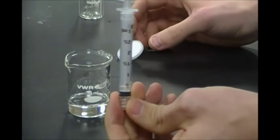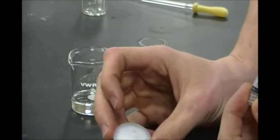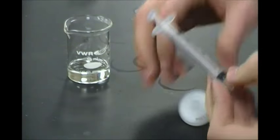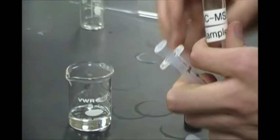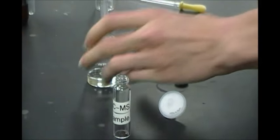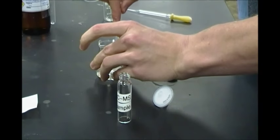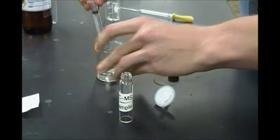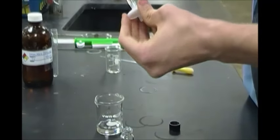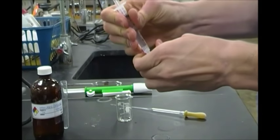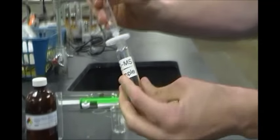We're going to use a 3 milliliter syringe as well as this little screw-on filter here. We'll place it inside this capsule. So we'll just draw up some of our sample into the syringe, put on my filter, and then just filter it through.